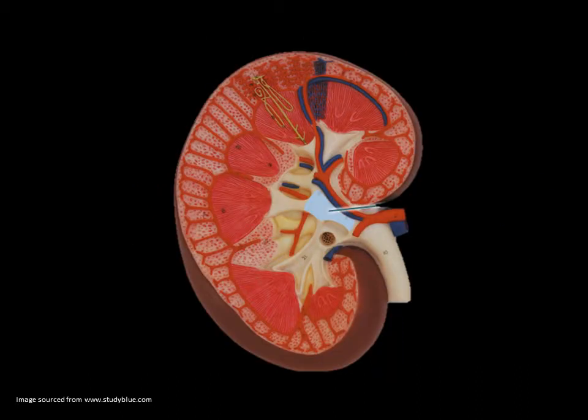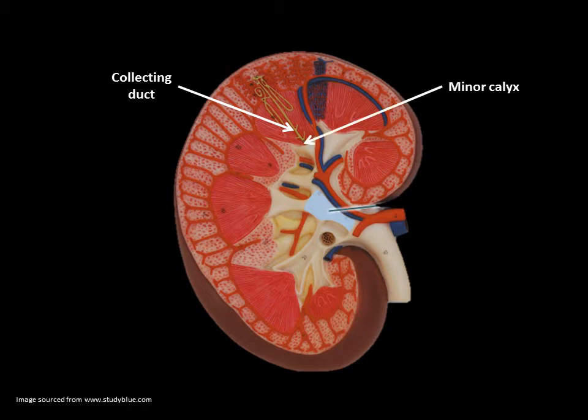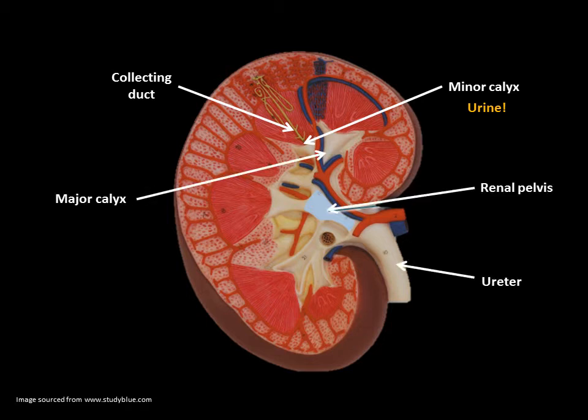Now the filtrate has reached its appropriate concentration and moves down the collecting duct to join other filtrates from many of the other nephrons. The filtrate now moves into the minor calyx where it can now be called urine. The urine travels through the major calyx into the renal pelvis and then on into the ureter.